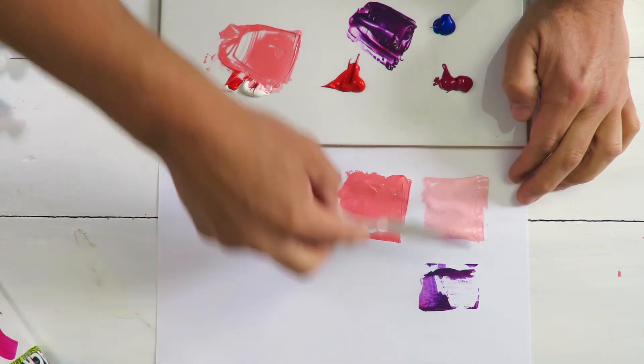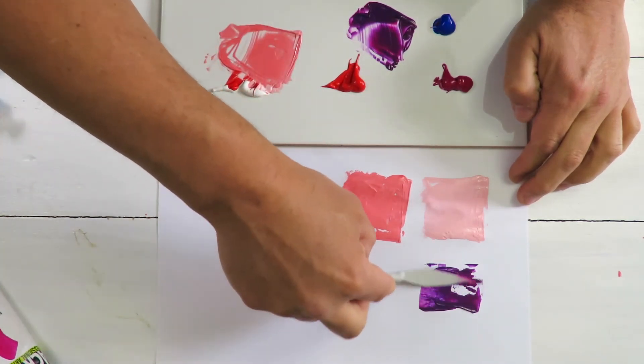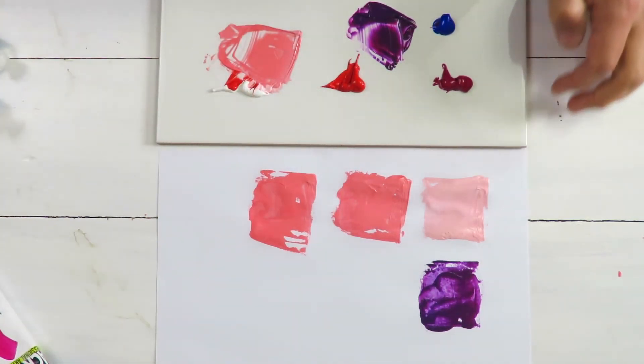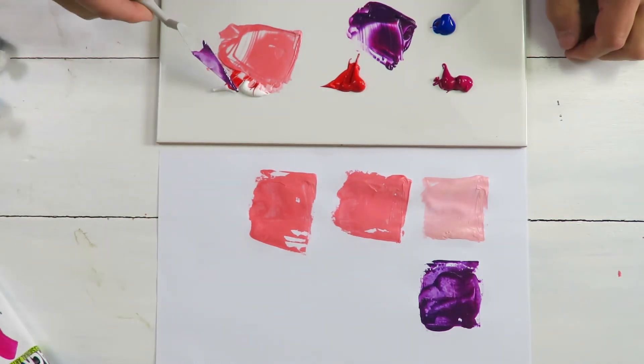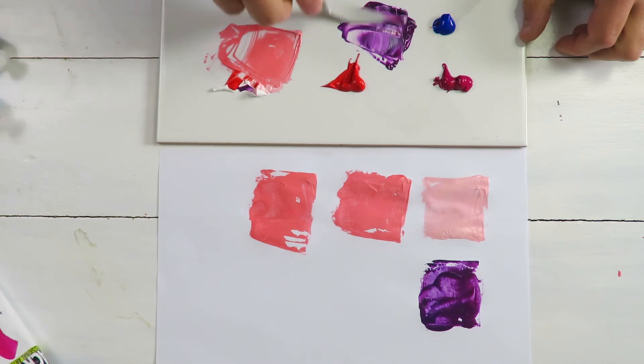Put this here for you, you can have a look. Now we're going to lighten this up a bit and put some white paint with it. Mix this up. Make a nice violet colour.